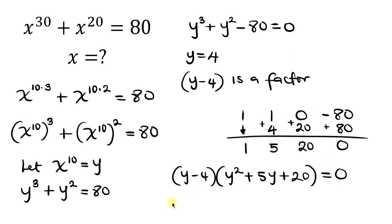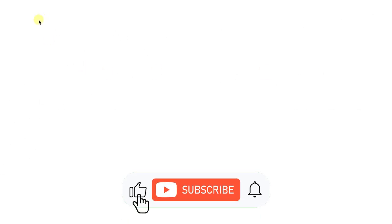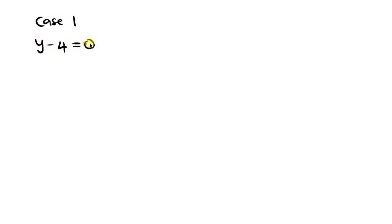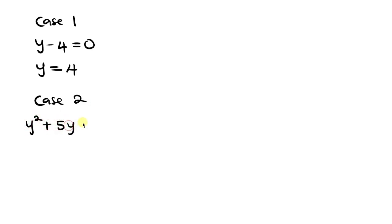So we have two cases. Case 1: y minus 4 equals 0. Case 2: the quadratic equation y squared plus 5y plus 20 equals 0. Since we are only interested in real solutions, let's find the discriminant of this quadratic equation. The discriminant is equal to b squared minus 4ac.